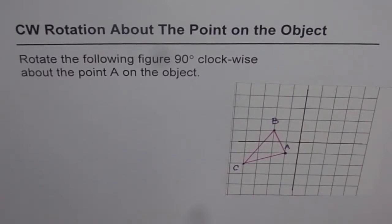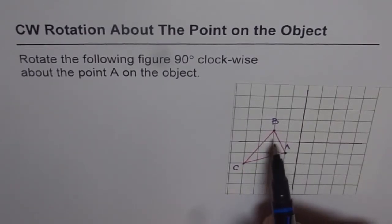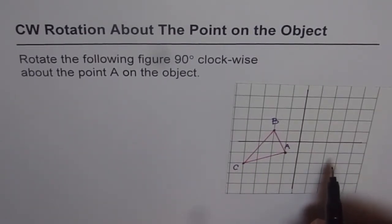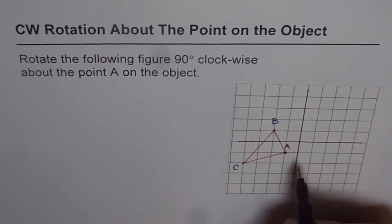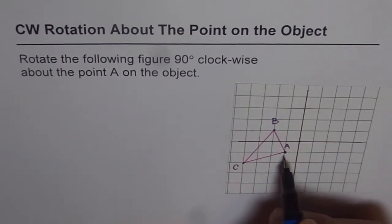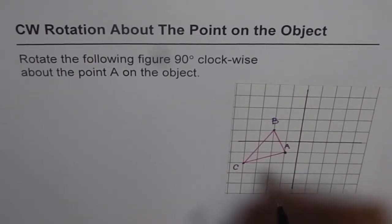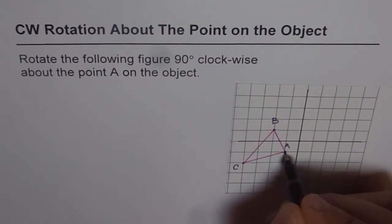We are asked to rotate the figure 90 degrees clockwise about the point A on the object. We are given triangle ABC on the coordinate plane, and we have to rotate it clockwise about point A. This means point A is our center of rotation, and about this point we have to move the triangle.